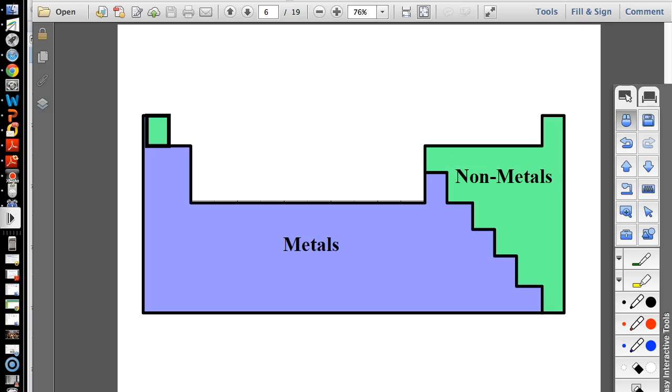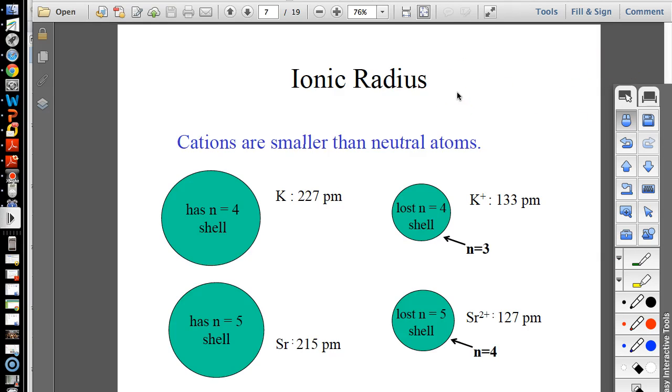Next unit, we're going to get into bonding and naming and kind of a little bit more chemistry. I'm excited. I like that. Here's ionic radius, so here's a bunch of scary-looking numbers in circles. It's okay. Think about candy. Everything's fine.